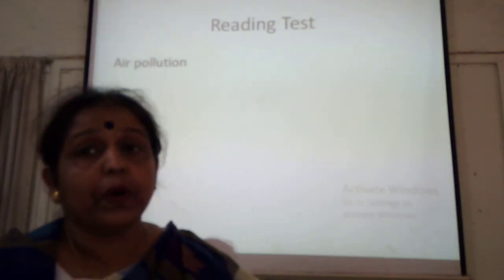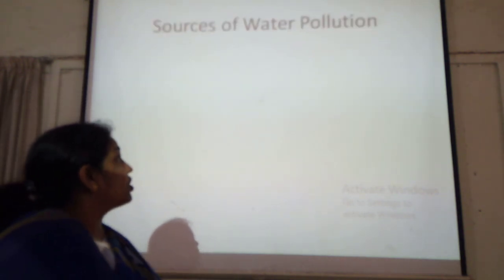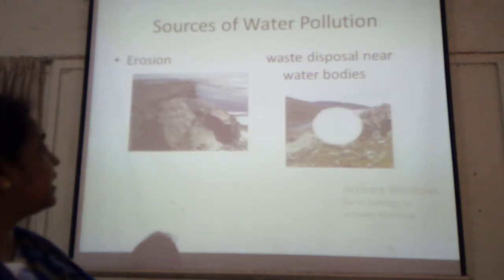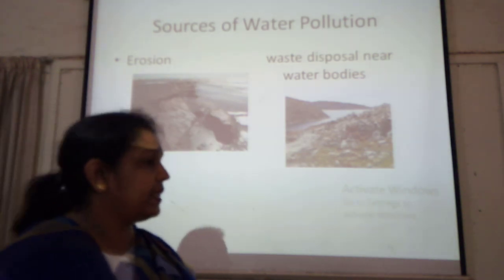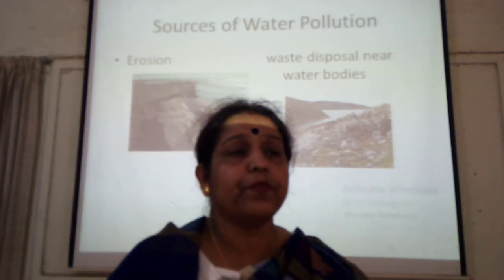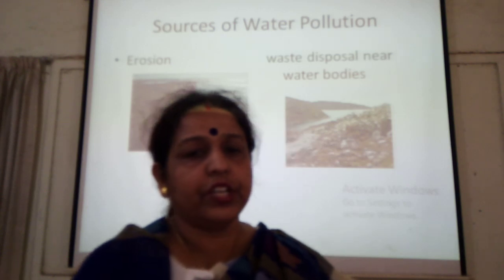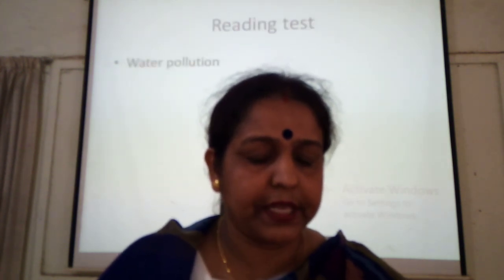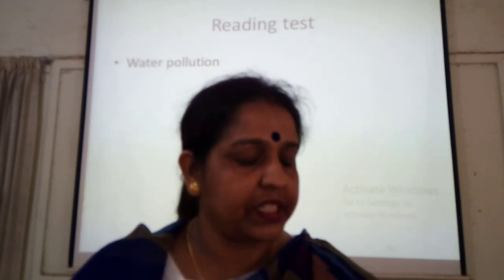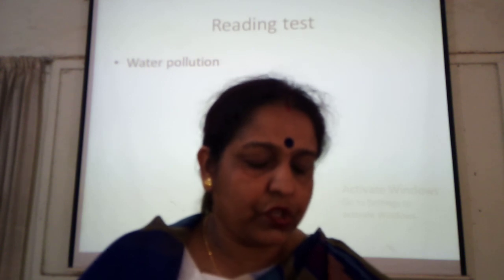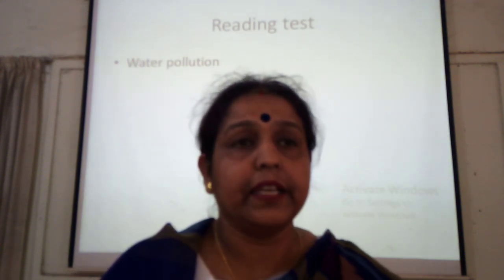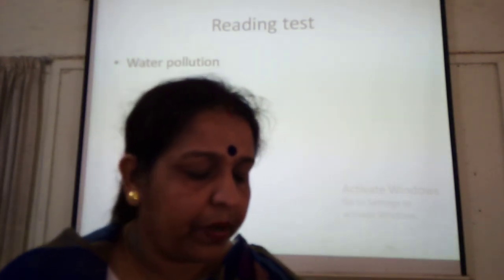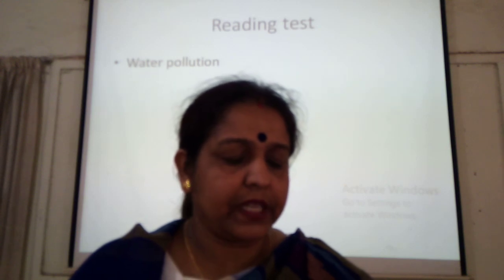Now we will learn about water pollution. Can you mention the reasons of water pollution? Yes, that is erosion and waste disposal near water bodies. We very often throw waste here and there, we throw waste into drains, and it ultimately flows into rivers or canals and pollutes our water. Water pollution can occur in oceans, rivers, lakes, ponds, and underground reservoirs. As different water sources flow together, the pollution can spread easily and quickly.